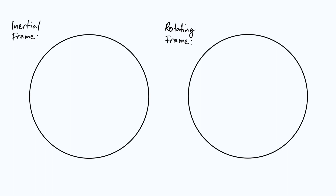We're going to imagine first that we're in an inertial frame — a non-rotating frame — and think about an object which is just flying along in a straight line with a constant velocity. I'm going to represent it with a cross, drawn in the center of this circle, which represents our inertial frame, and it's going to move from the center out to the radius in a vertical line. We then mark where that object is halfway through the motion, and subdivide further: at a quarter and three-quarters of the way through. So we now have five snapshots at equally spaced time intervals.